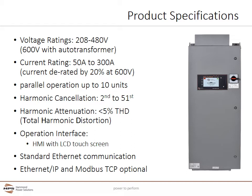The HPS TrueWave active harmonic filter offers voltage ratings from 208 to 480 volts; 600 volts can be achieved with the addition of an auto transformer. Current rating includes frame sizes from 50 to 300 amps, and up to 10 units can be installed in parallel for applications up to 3000 amps. The TrueWave provides harmonic cancellation from the 2nd through the 51st harmonic, achieving below 5% total harmonic distortion. It features an HMI with an LCD touchscreen, standard Ethernet communications, along with Ethernet IP and Modbus TCP optional communication modules.